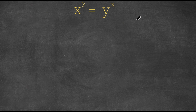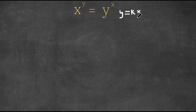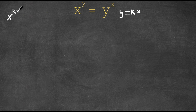I'm going to set y equal to kx, where k is a constant. Now I'm going to rewrite the equation with y equaling kx. This gives us x to the power of kx equals kx to the power of x.